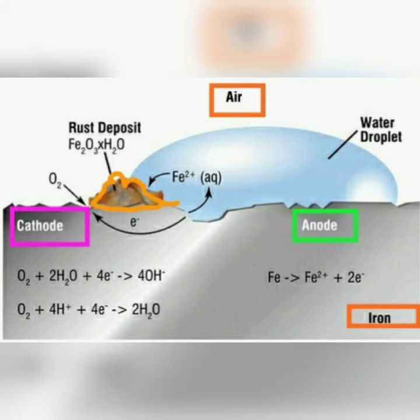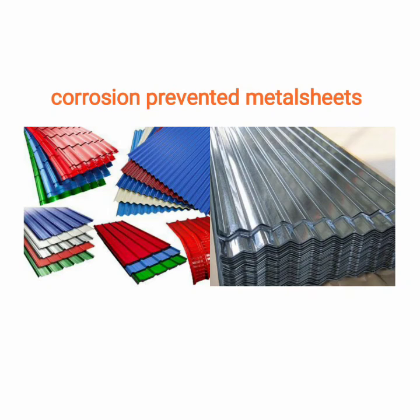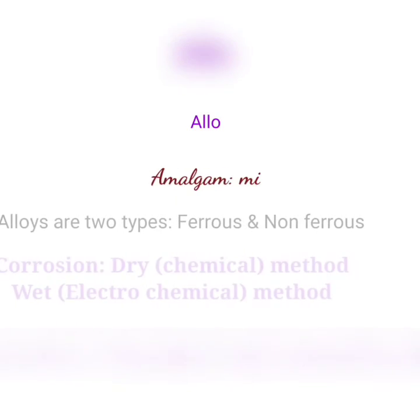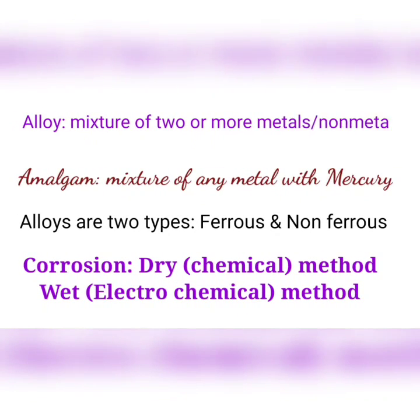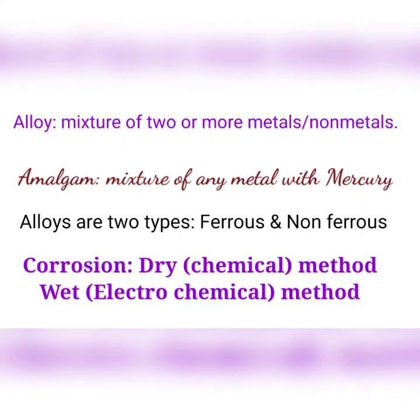Alloys are of two types. Ferrous and non-ferrous. Ferrous, where the iron is used is called ferrous. In the absence of iron, it is called non-ferrous. Example, duralumin. Example, steel.